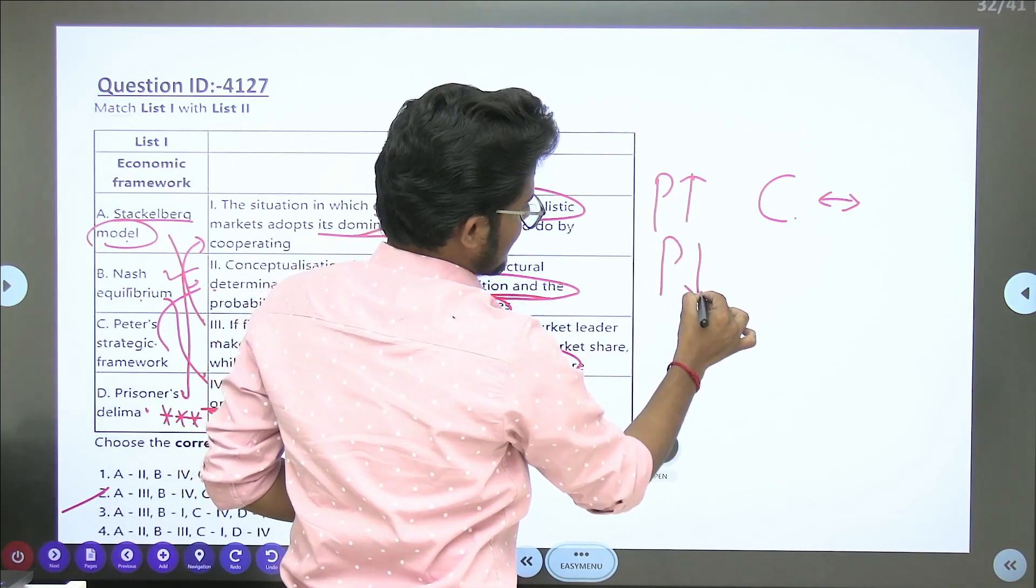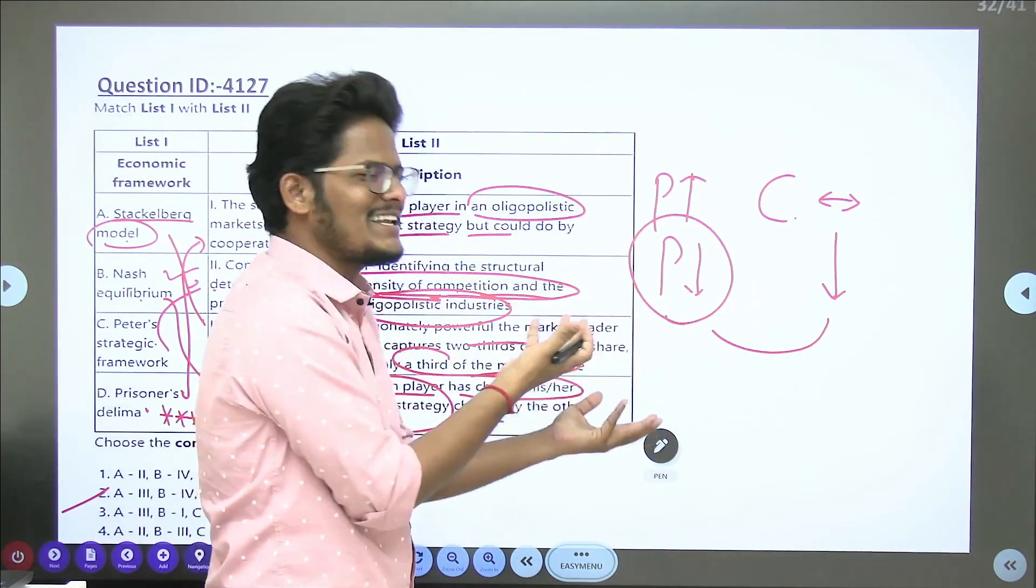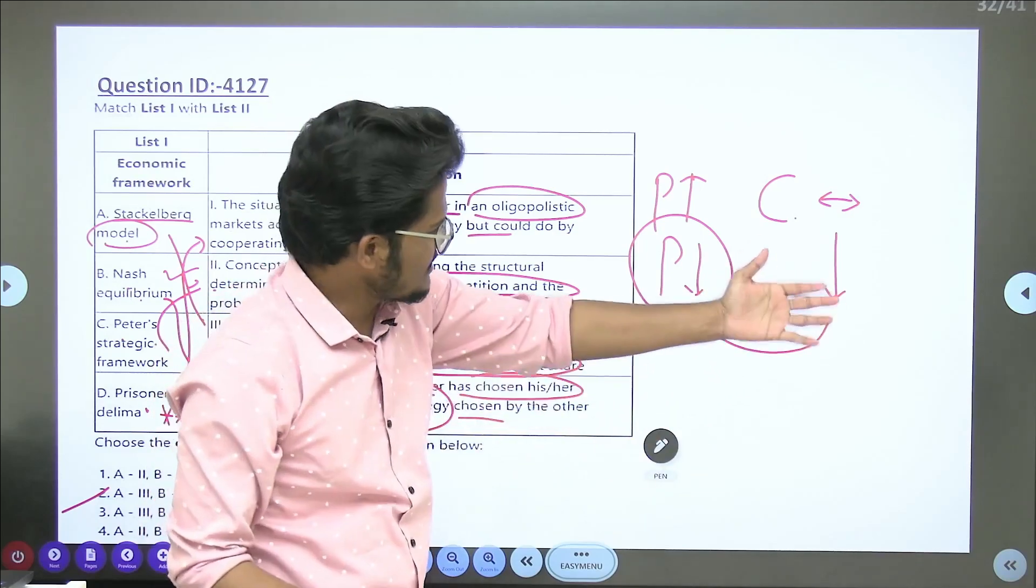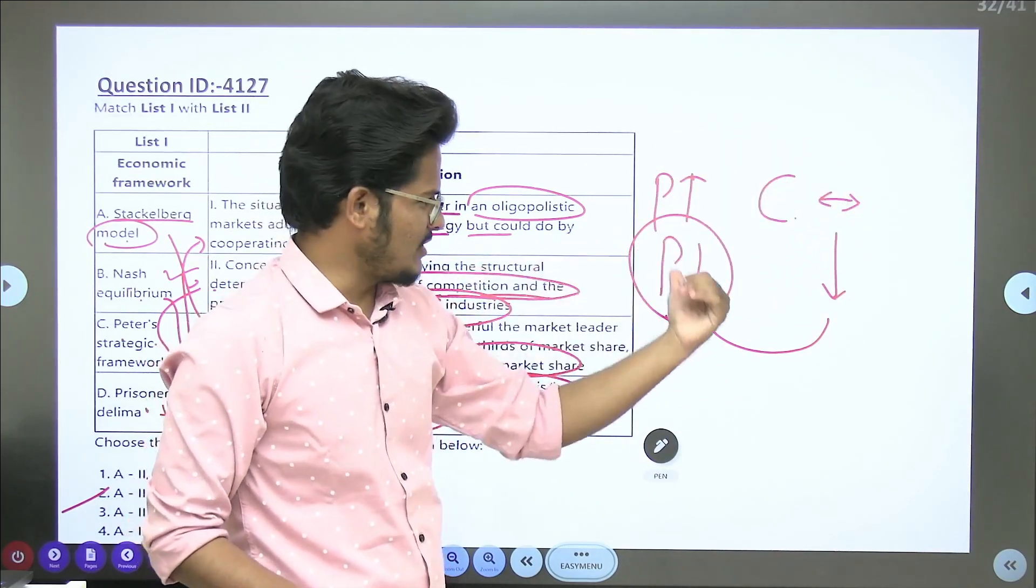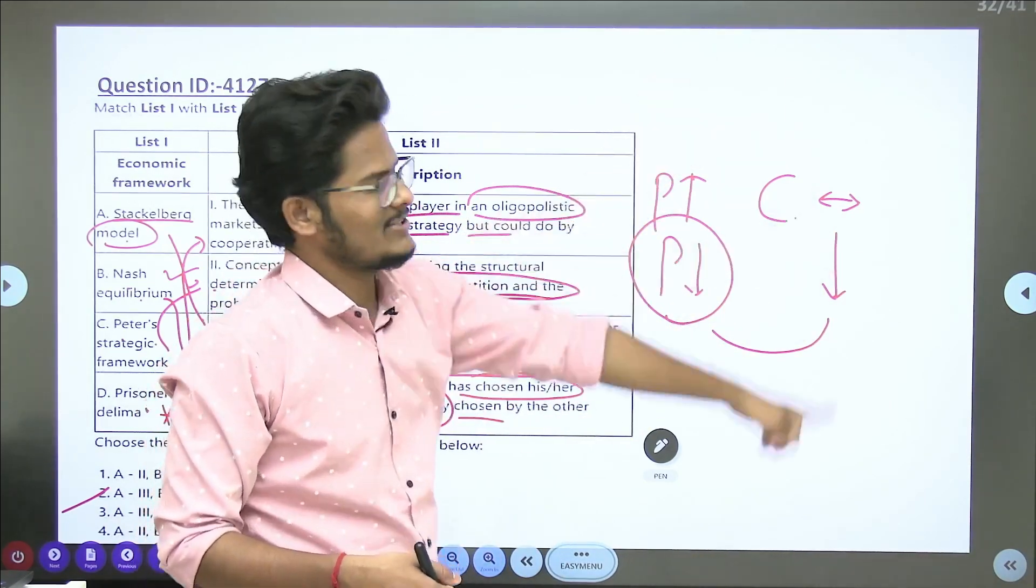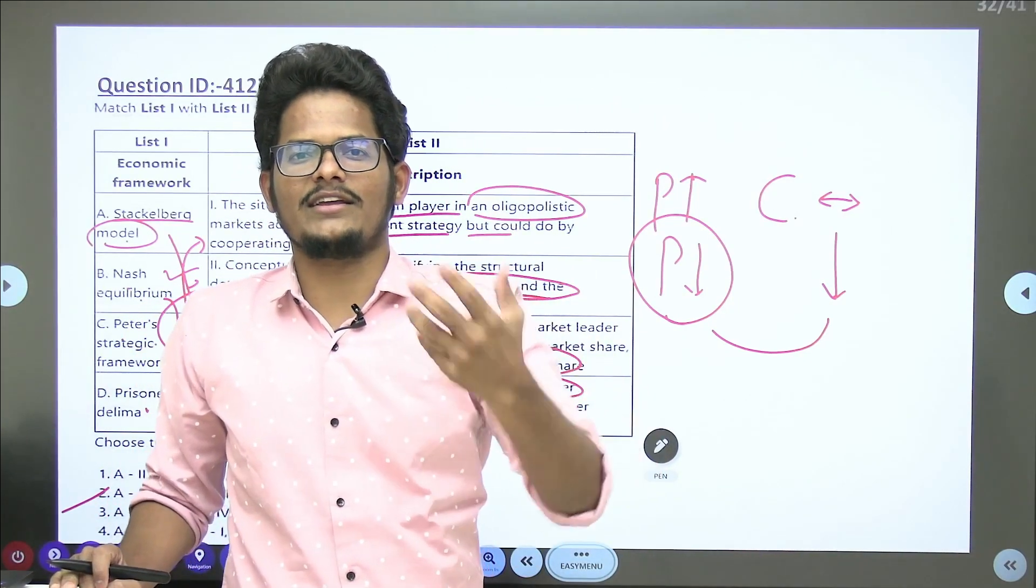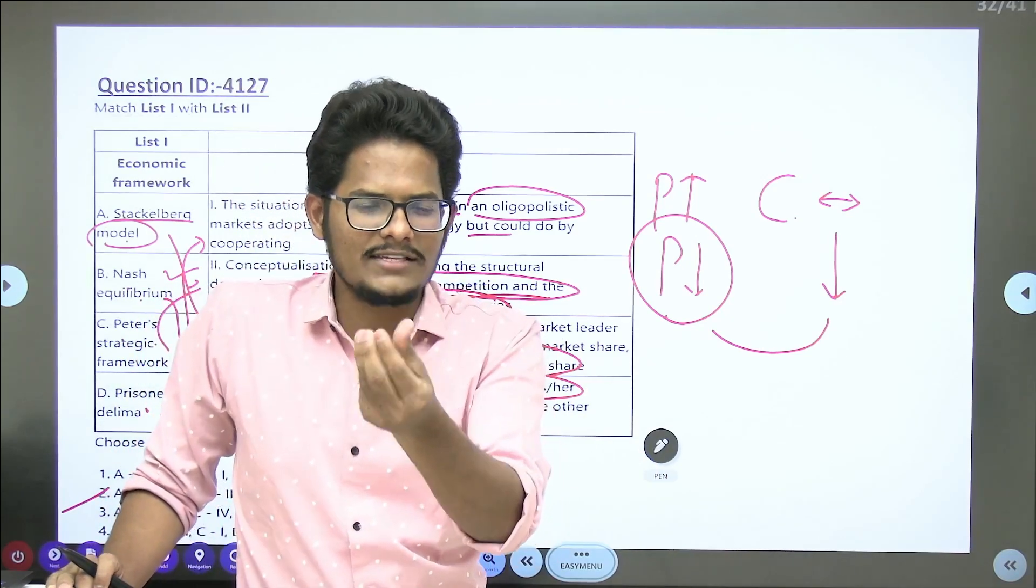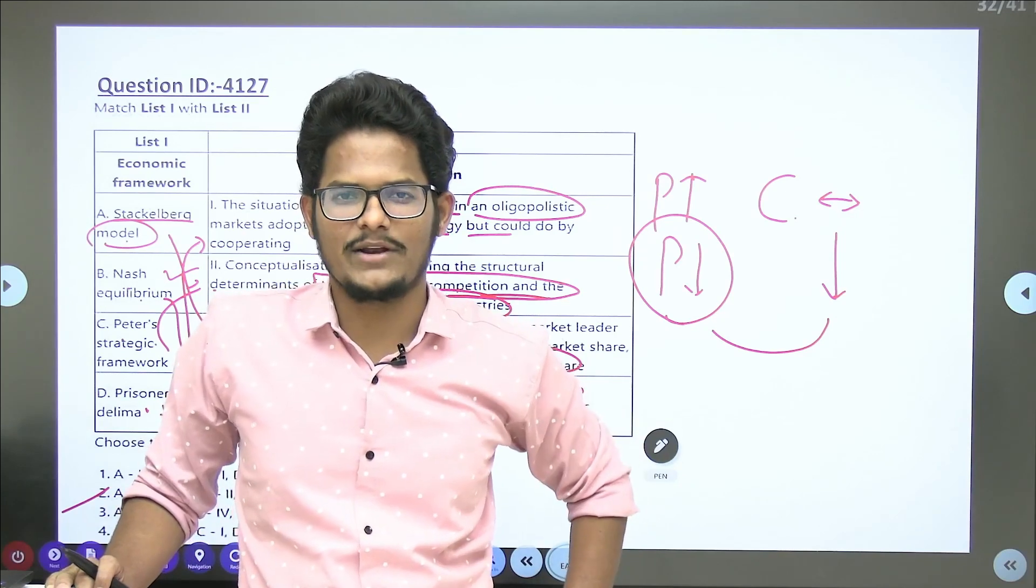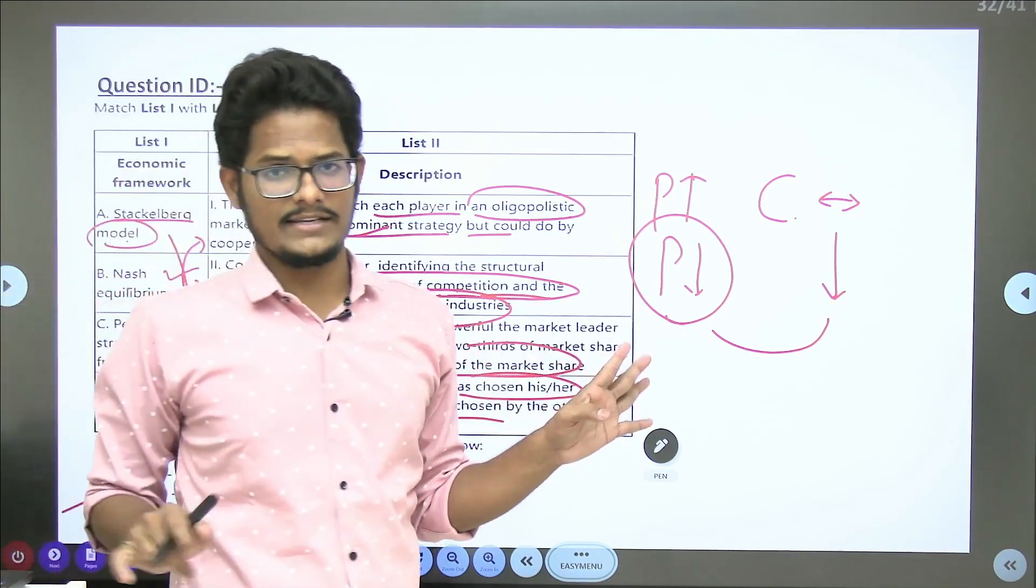When you change price, that will impact other firms. When you increase price, competitors in oligopoly will maintain same price, they will not increase. But when you decrease price, competitor also will reduce price. What benefit you get by decreasing price? Nothing, because when you decrease, he is also decreasing. This leads to price war, unnecessary competition. That competition is not even giving more sales, only very less portion of sales is increasing due to price change.